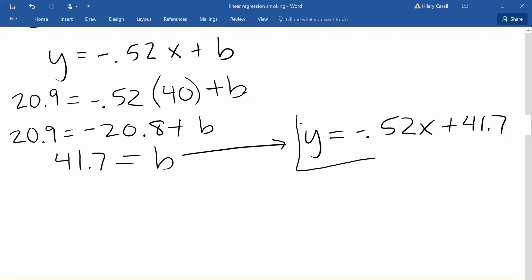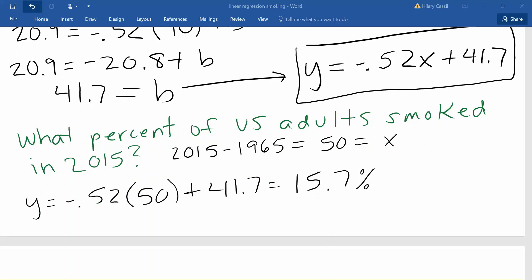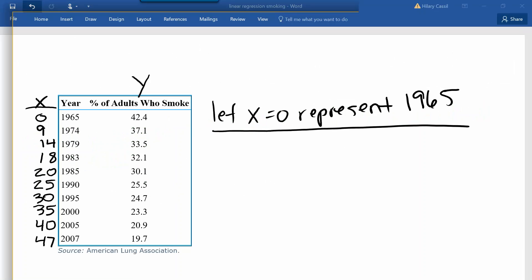Now that we have an equation to model the situation, let's use it to determine what percent of US adults smoked in 2015. Since 2015 is 50 years after what we called our starting point, this is going to give us an x value of 50. Replacing our x value with 50, we come up with an answer of 15.7 percent. That seems reasonable based on our original data.